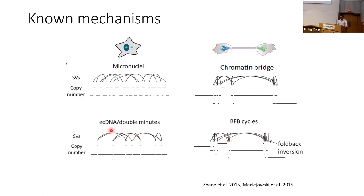Another phenomenon — really a phenotype rather than a mechanism — is called extrachromosomal circular DNA, or ECDNA. These are small circular DNAs resembling bacterial plasmids that are frequently found in tumor cells — about half of tumor cells have ECDNA. They don't follow Mendelian segregation, so they can reach dozens or hundreds of copies. The pattern you see is small fragments from different parts of the genome that are highly amplified. One source of ECDNA is broken DNA fragments from micronuclei or chromatin bridges stitching together into a circle.